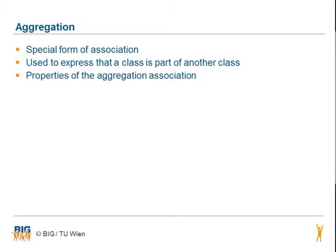The aggregation is a special form of an association. It is used to express that a class is part of another class. The aggregation association can have two different properties.